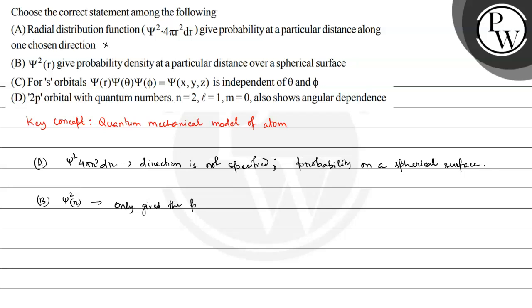Chi-squared(r) only gives the probability at distance r along a direction. The values that come according to the angular quantum numbers — the probability density in that direction from the angular wave function — that will be signified by chi-squared(r). So option B is also incorrect because there is no concept of a spherical surface here.